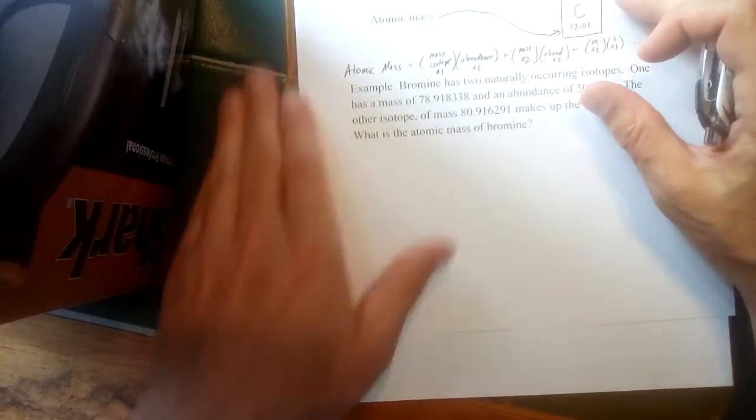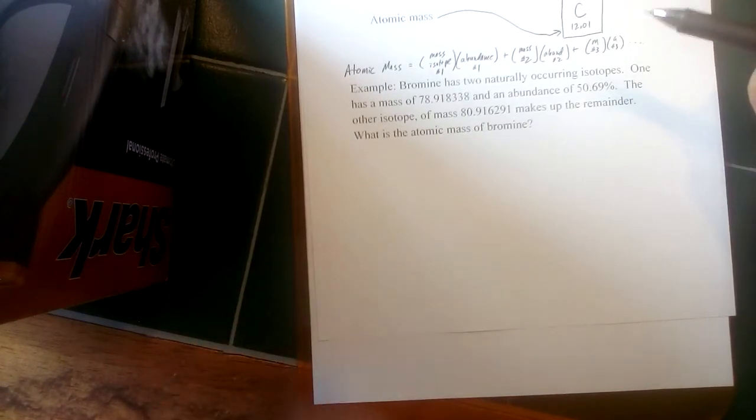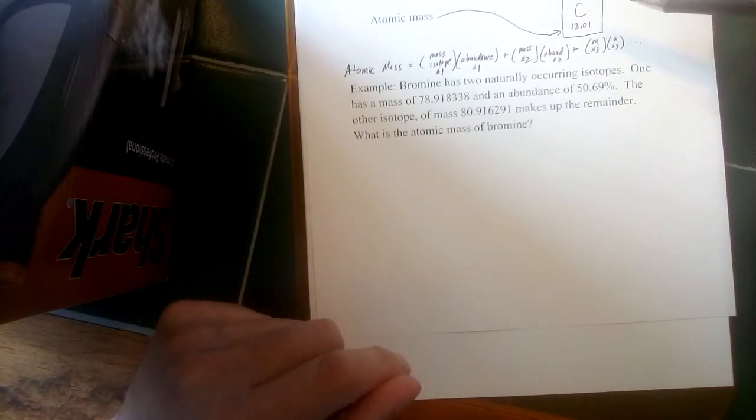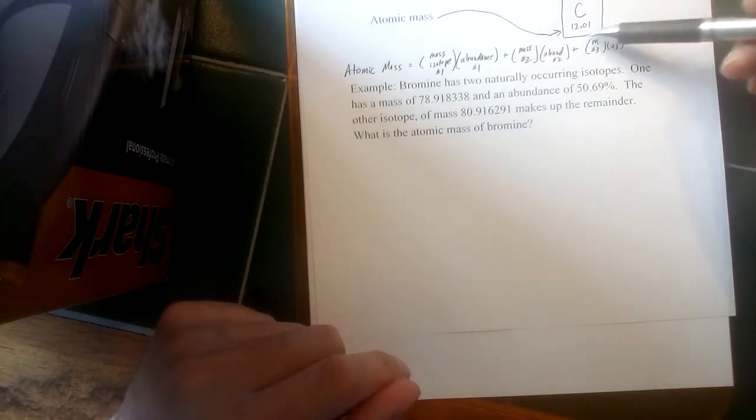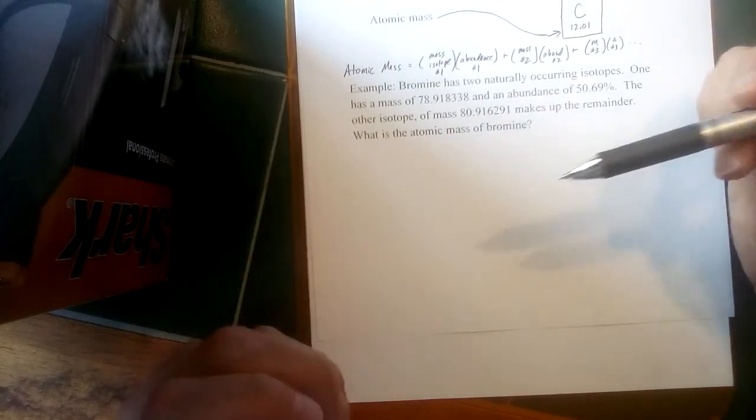There's a little difference in there because some of the mass gets converted into energy for a lot of these, so sometimes the actual mass is a little lower than the masses of what would be the individual particles in the nucleus. But because the weighted average here is so much closer to 12, that tells us most of the naturally occurring carbon is carbon-12.